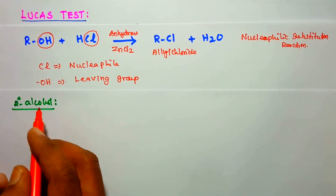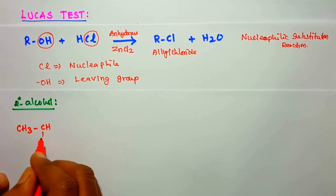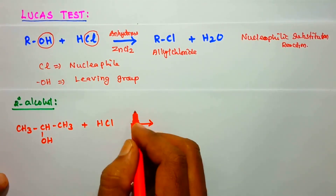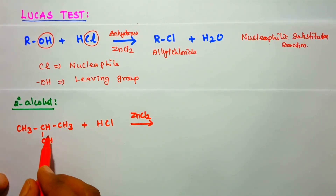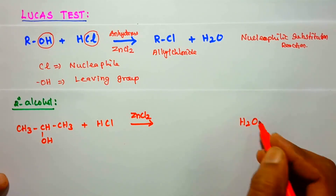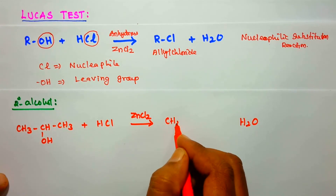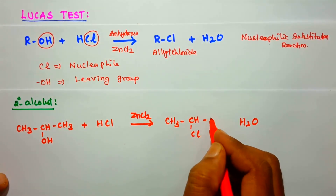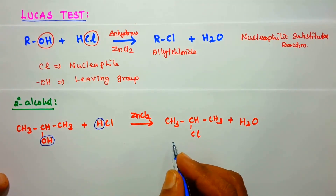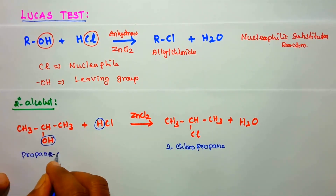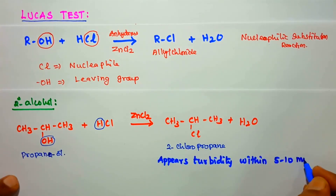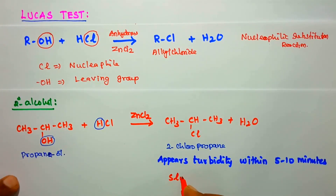For secondary alcohol, for example propan-2-ol (CH3-CH(OH)-CH3), it reacts with concentrated hydrochloric acid in the presence of anhydrous zinc chloride. The OH group is replaced by Cl, and water is formed, giving CH3-CHCl-CH3 (2-chloropropane). Here, turbidity appears within 5 to 10 minutes — a slow appearance of turbidity takes place.